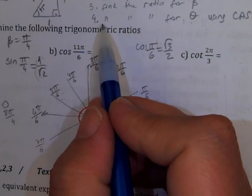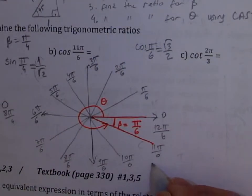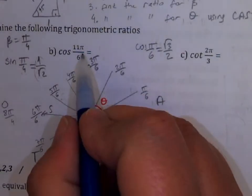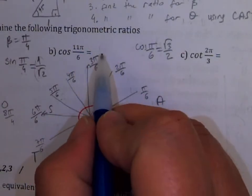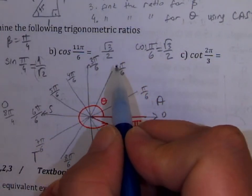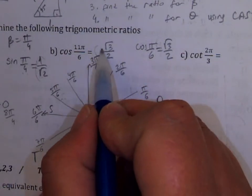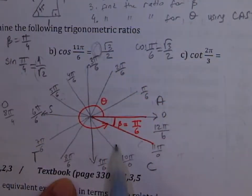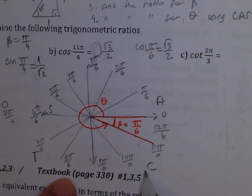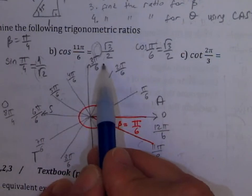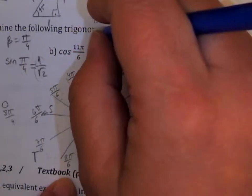Final step: use CAST. We know cosine(11π/6) has a numerical value of √3/2, but we need to decide the sign. We are in quadrant 4, where cosine is positive. Therefore cosine(11π/6) is positive, so the answer is simply √3/2.